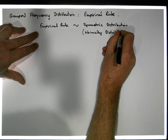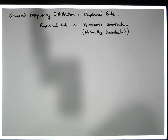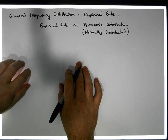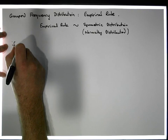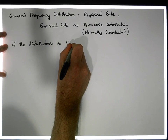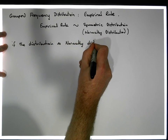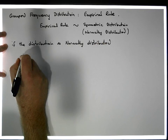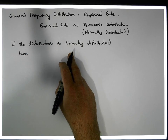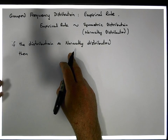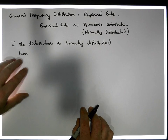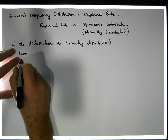What the rule tells us is that, if the distribution is normally distributed, within a certain number of standard deviations of the mean, what percentage of the curve will be accounted for within that number of standard deviations. More importantly, it tells us with respect to one, two, and three standard deviations.